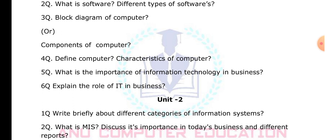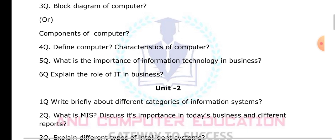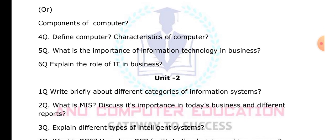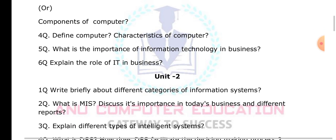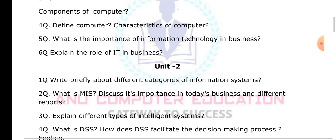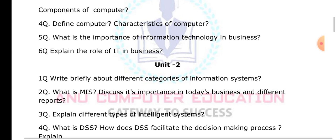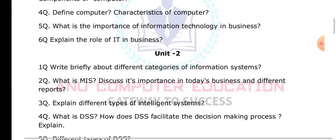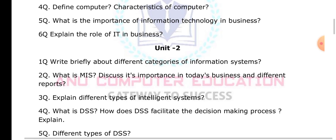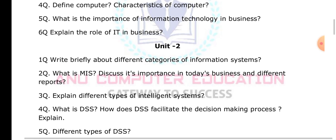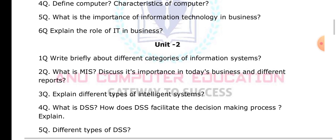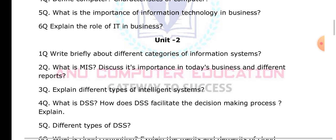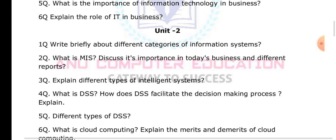If you want to solve unstructured problems, then you have to use the concept called Decision Support System (DSS). Explain the different types of intelligent systems, what is DSS, and how DSS is used in the organization to facilitate the decision-making process, as well as the different types of DSS.